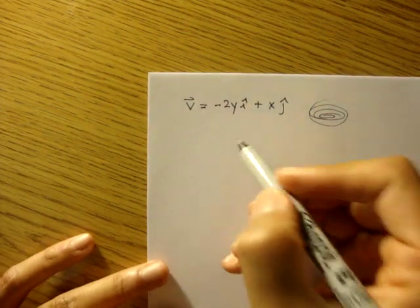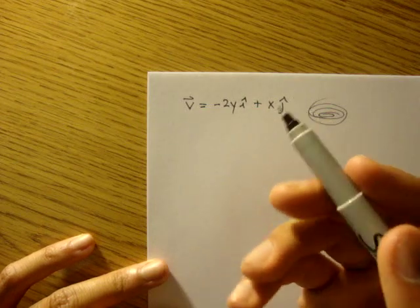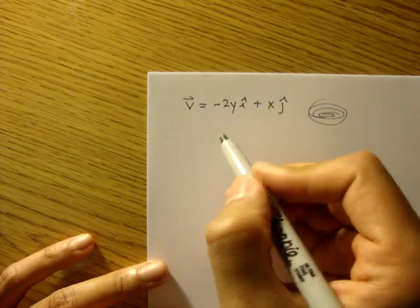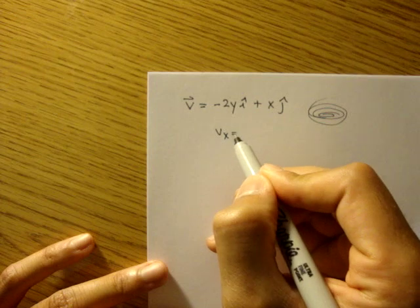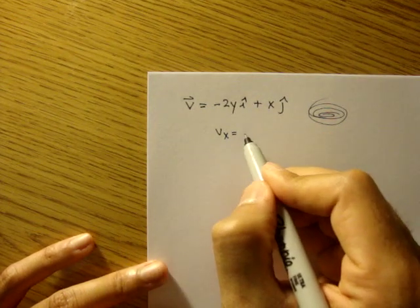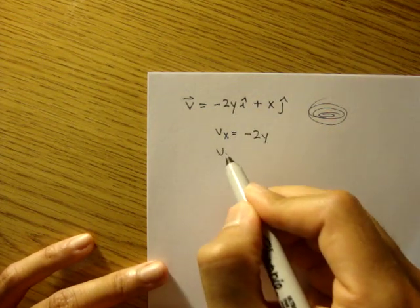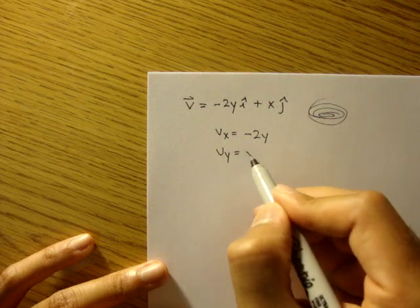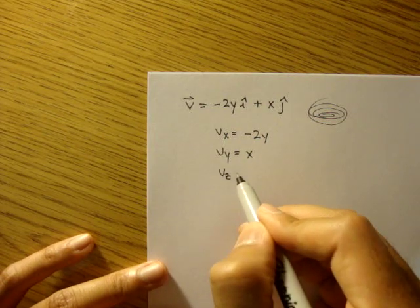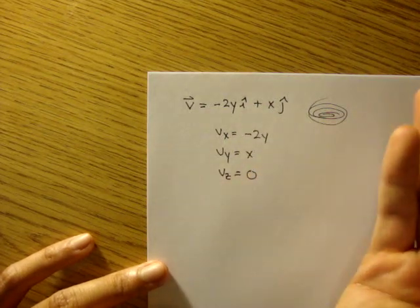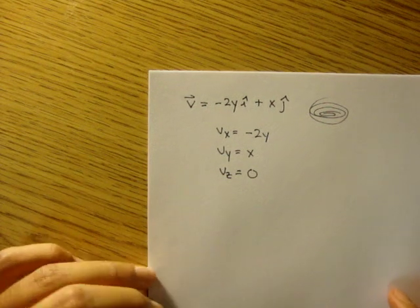So of course, the very first thing we want to do is write down our x, y, and z components of this velocity field. So our x component of this velocity field is just negative 2y. Our y component is just x, and our z component is actually 0. It's a two-dimensional flow.